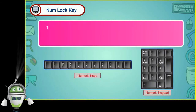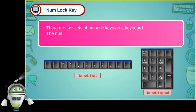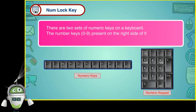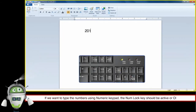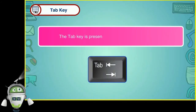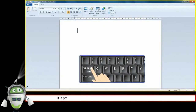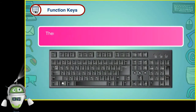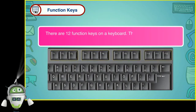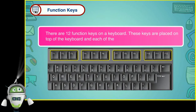Number Lock key: There are two sets of numeric keys on a keyboard. The number keys 0 to 9 on the right side of the keyboard are called the numeric keypad. If we want to type numbers using the numeric keypad, the Number Lock key should be active or on. This is also a toggle key. Tab key: The Tab key is present on the left side of the keyboard. It is pressed to move some spaces forward, moving the cursor to the next tab. Function keys: There are 12 function keys on a keyboard, placed on top of the keyboard, and each performs a specific function.